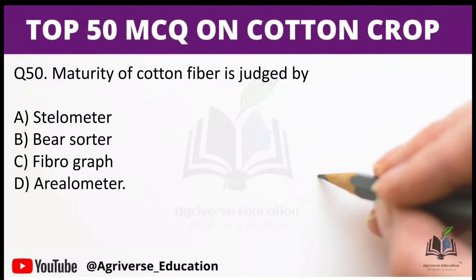Question 50: Maturity of cotton fiber is judged by which instrument? Options are: A) stilometer, B) bear sorter, C) fibrograph, D) arealometer. The right answer is option D — arealometer. Maturity of cotton fiber is judged by arealometer.